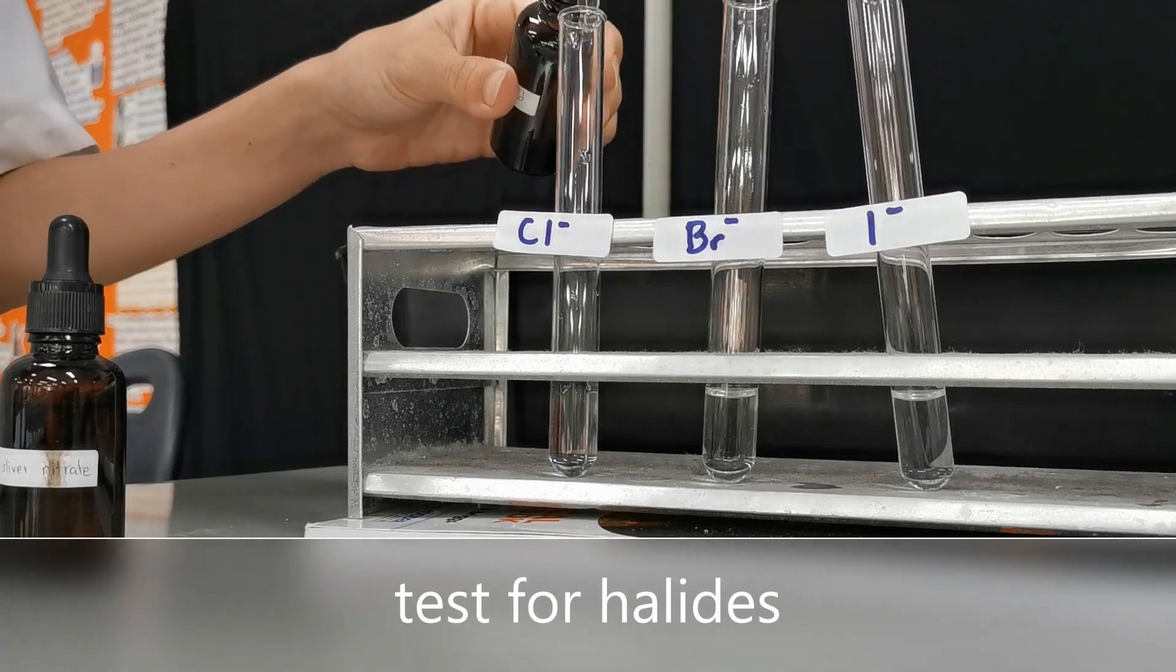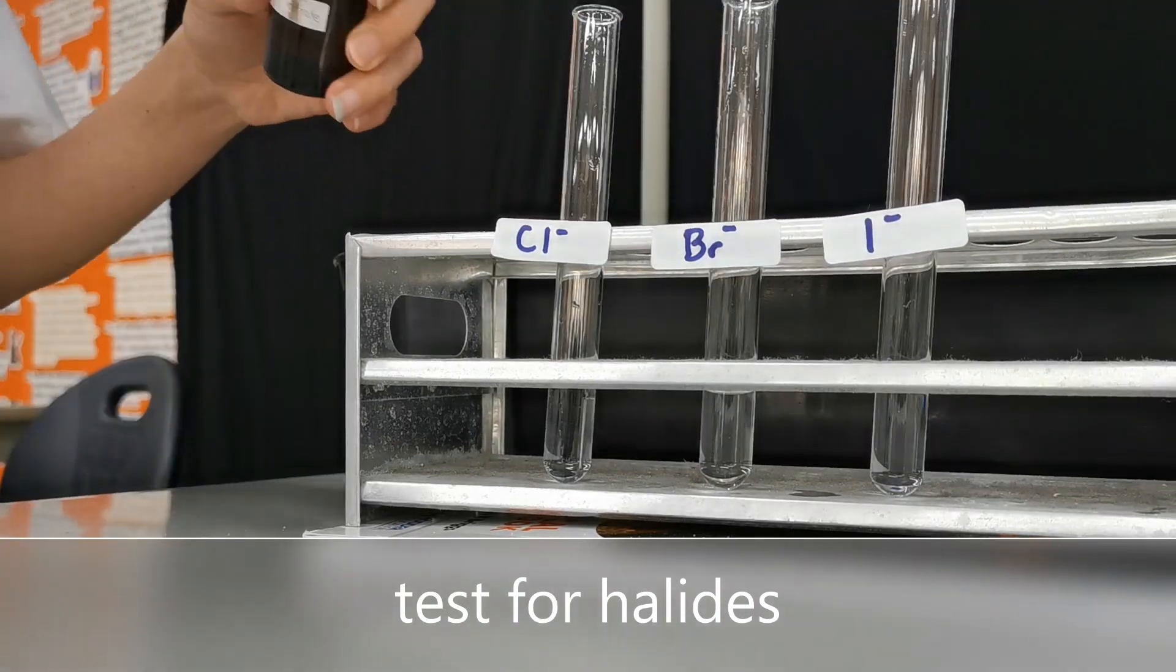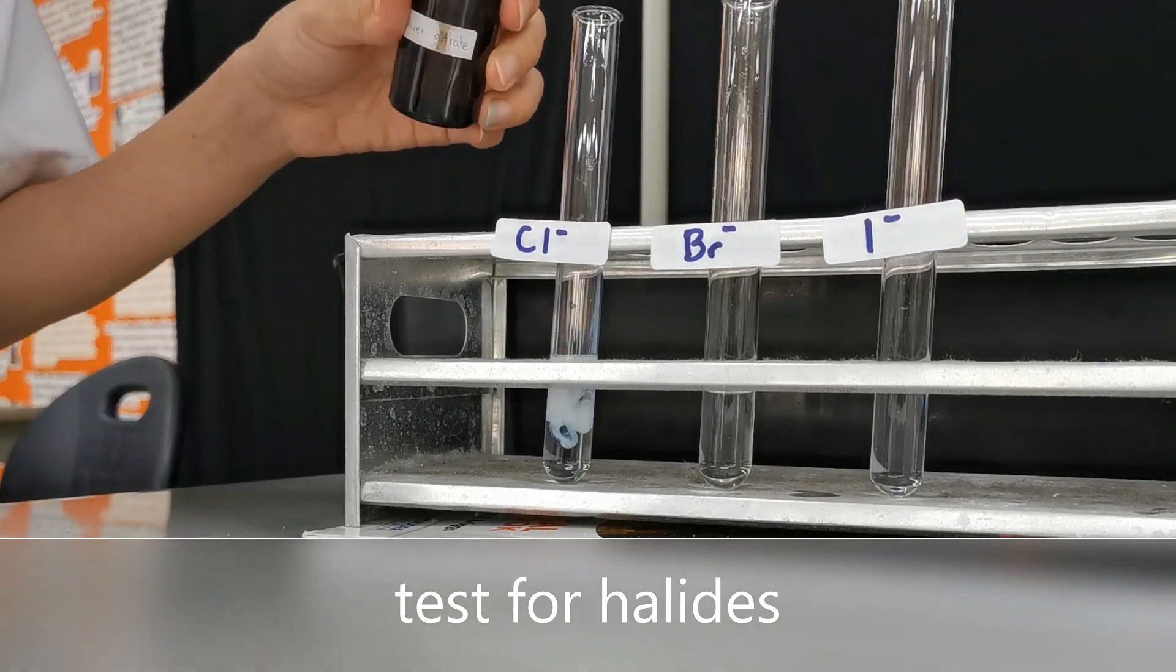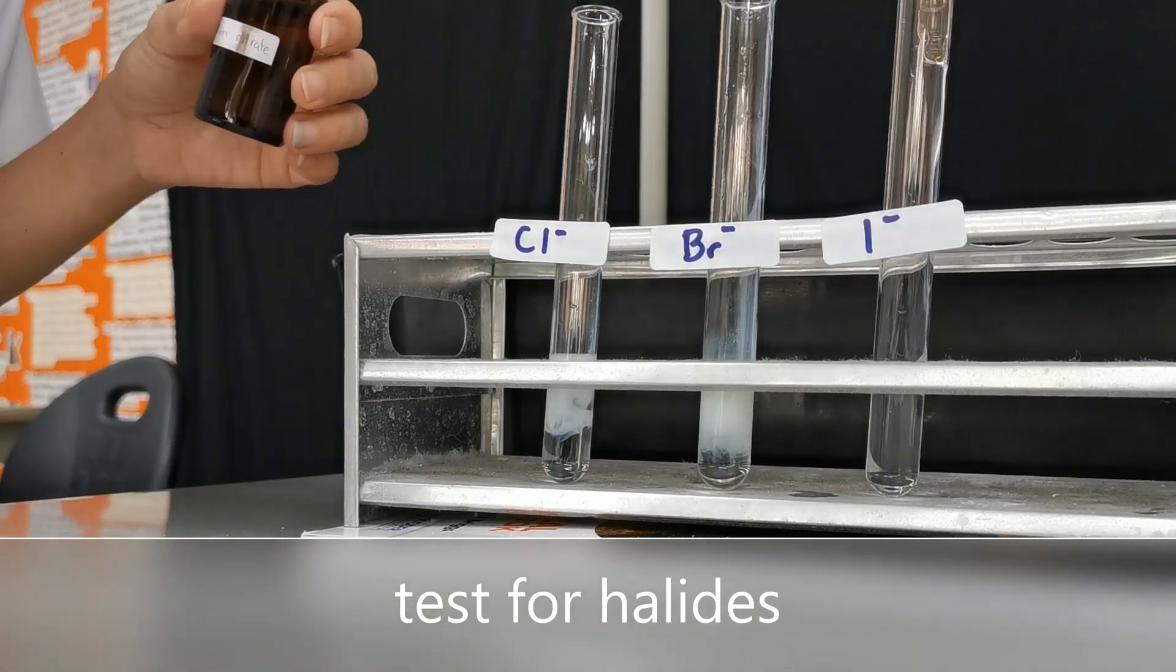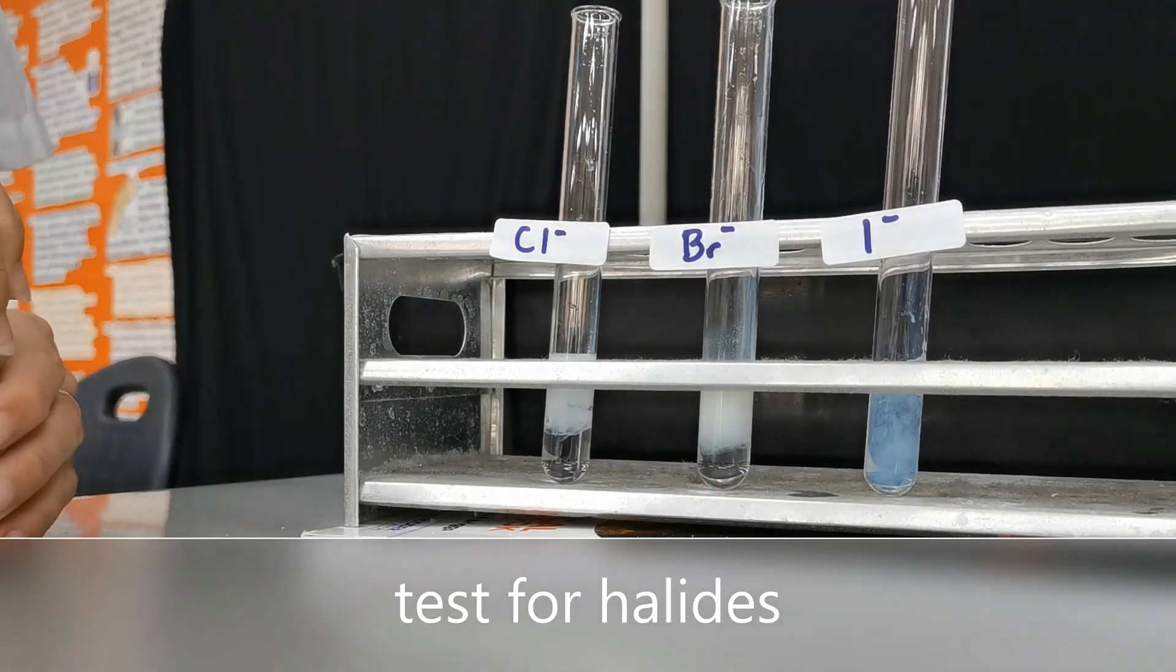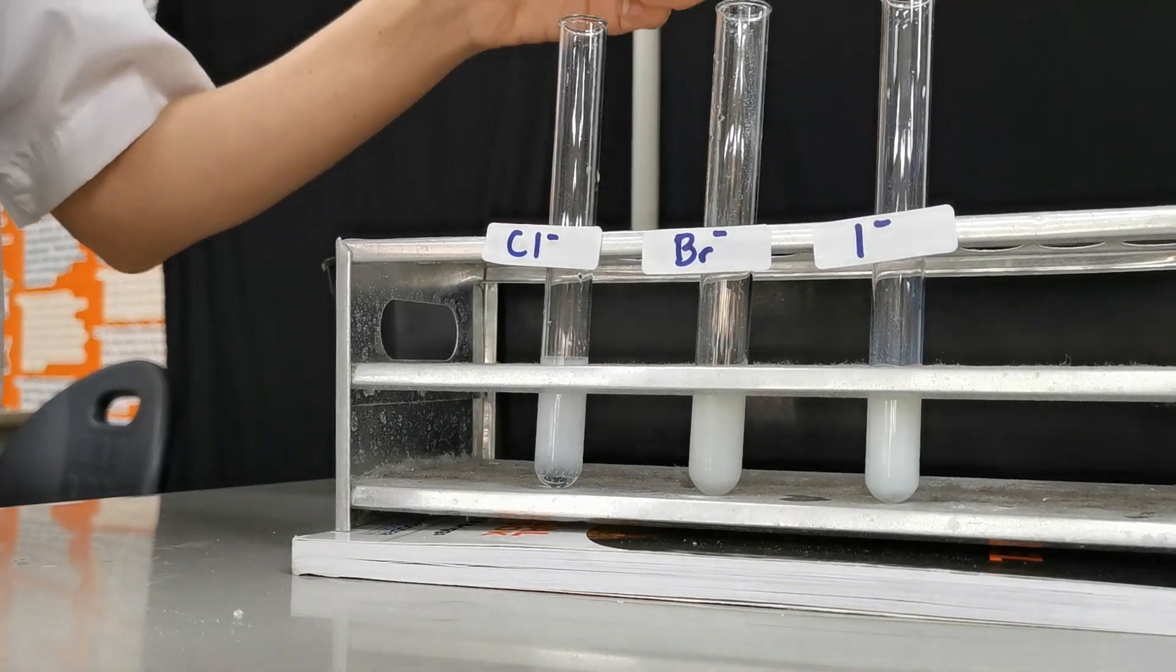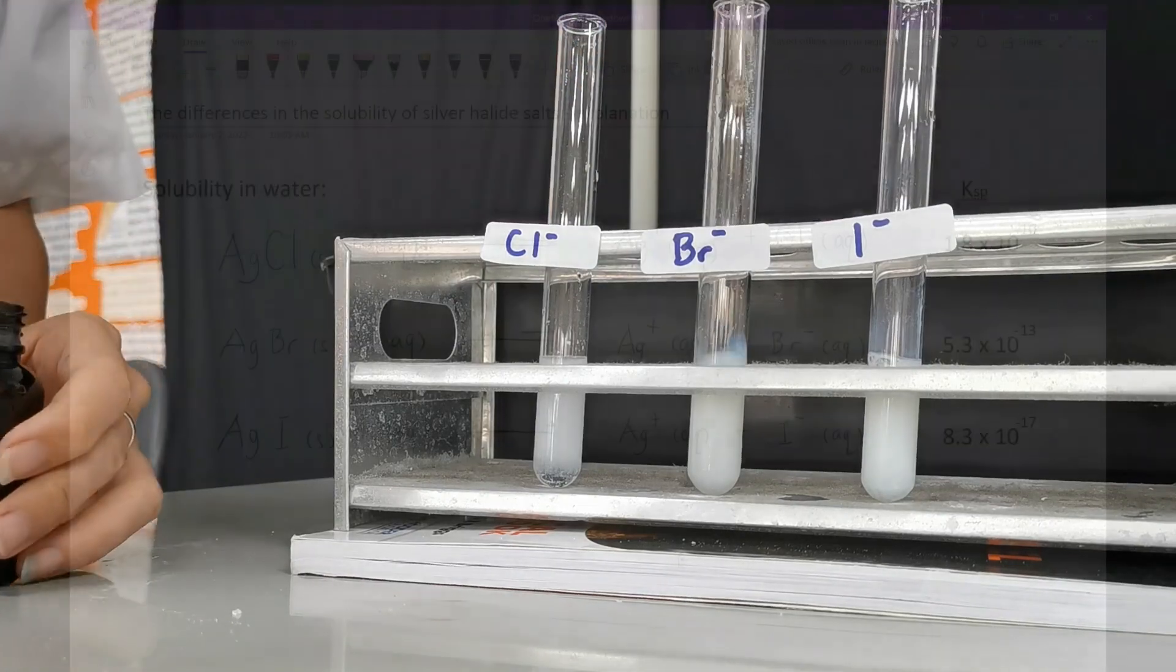Hi guys, the identification for halides involves the addition of nitric acid followed by silver nitrate and then ammonia. I'm here today to talk shortly about why silver chloride is soluble in ammonia, silver bromide is only soluble in concentrated ammonia, and silver iodide doesn't seem to dissolve at all.